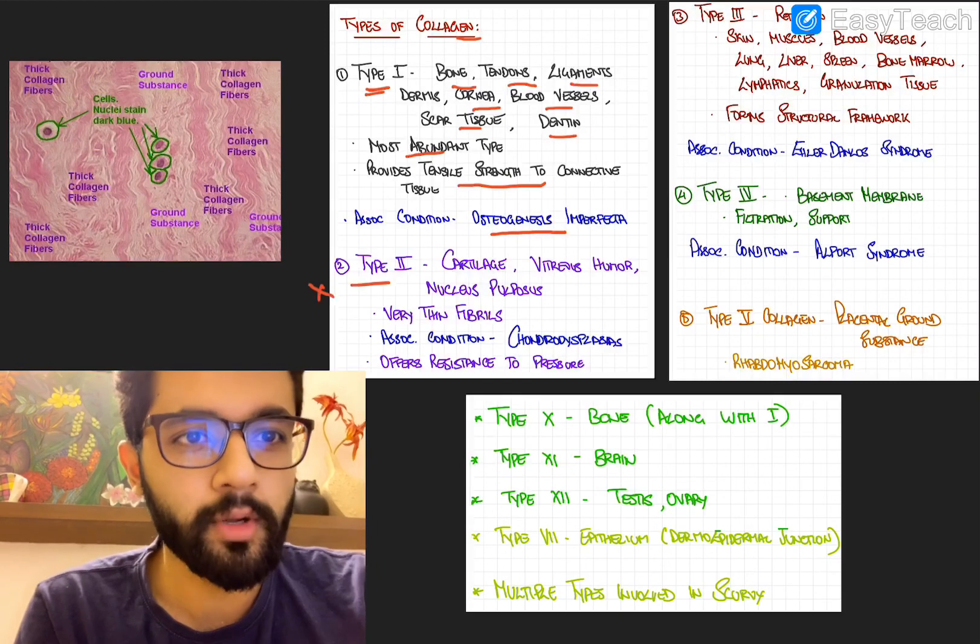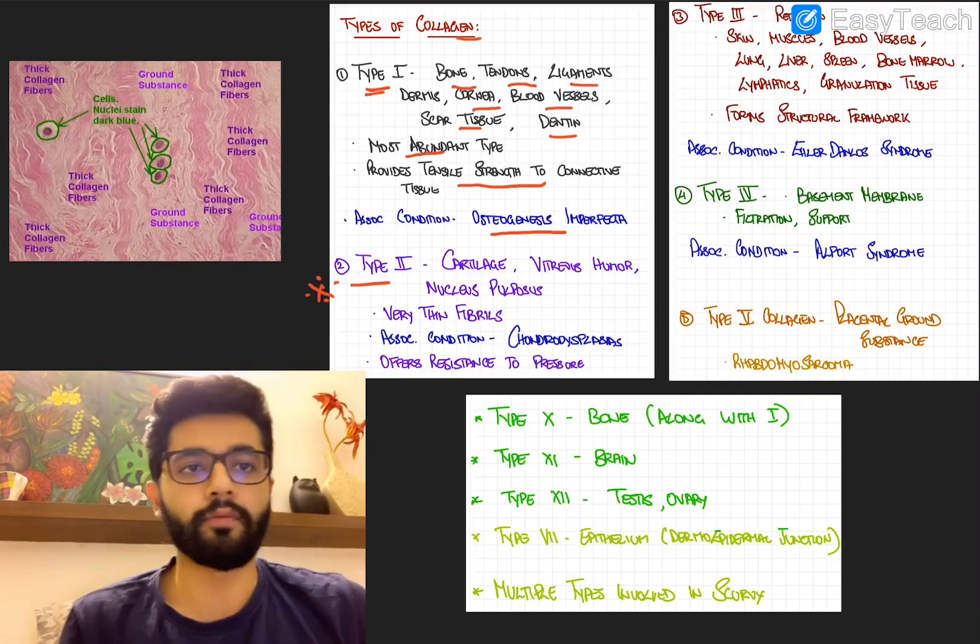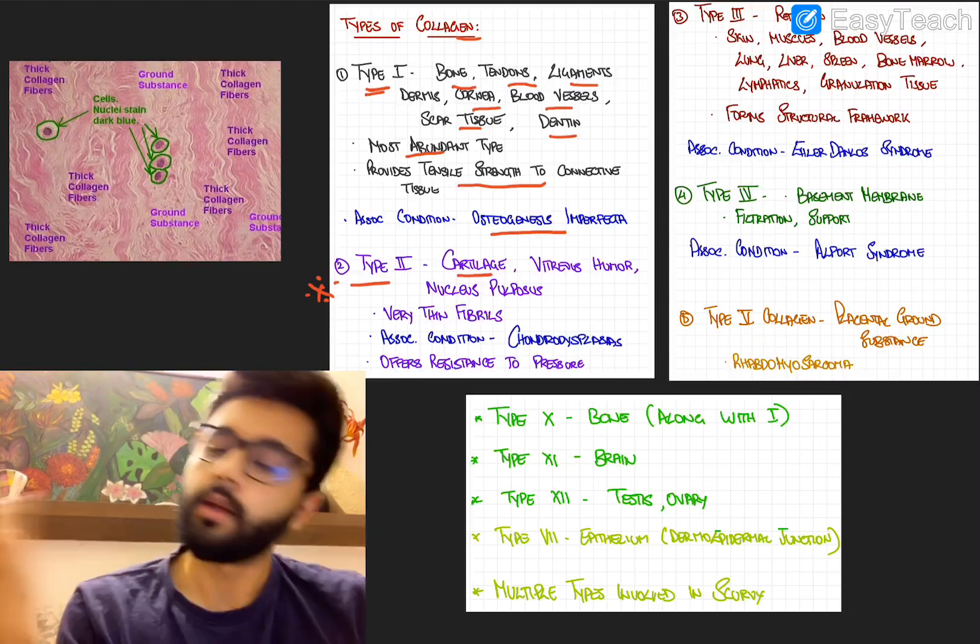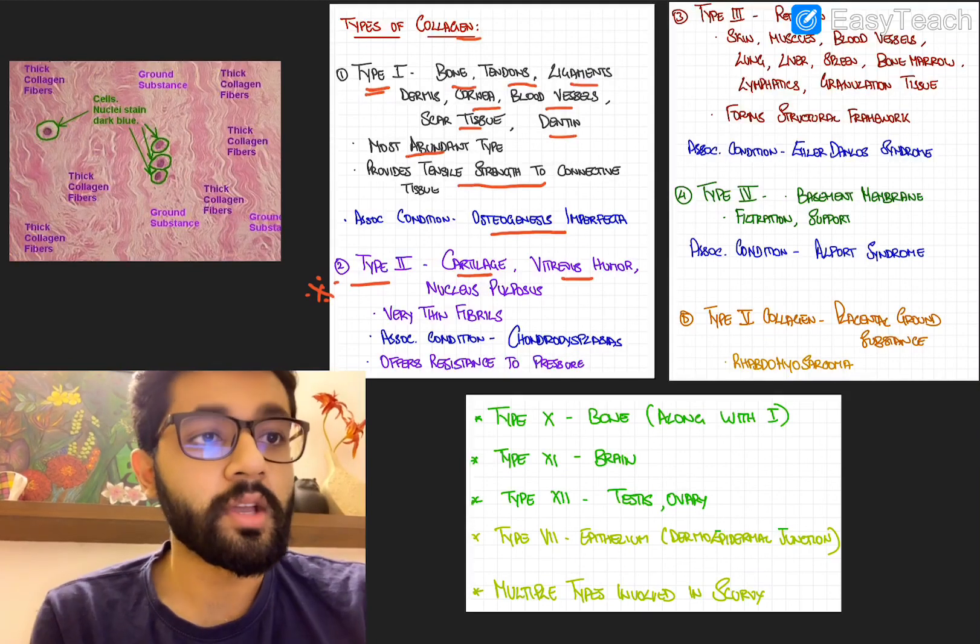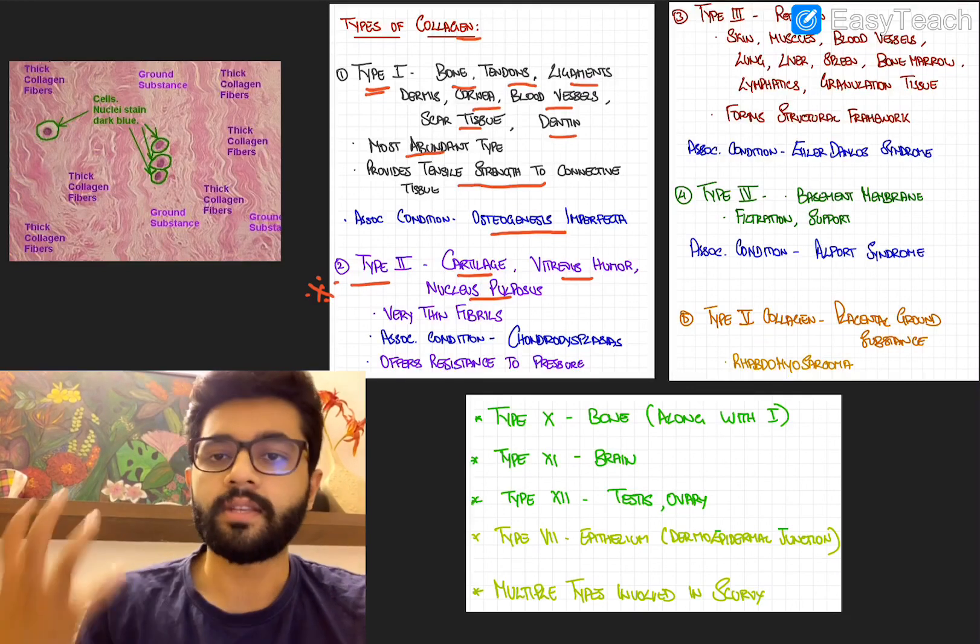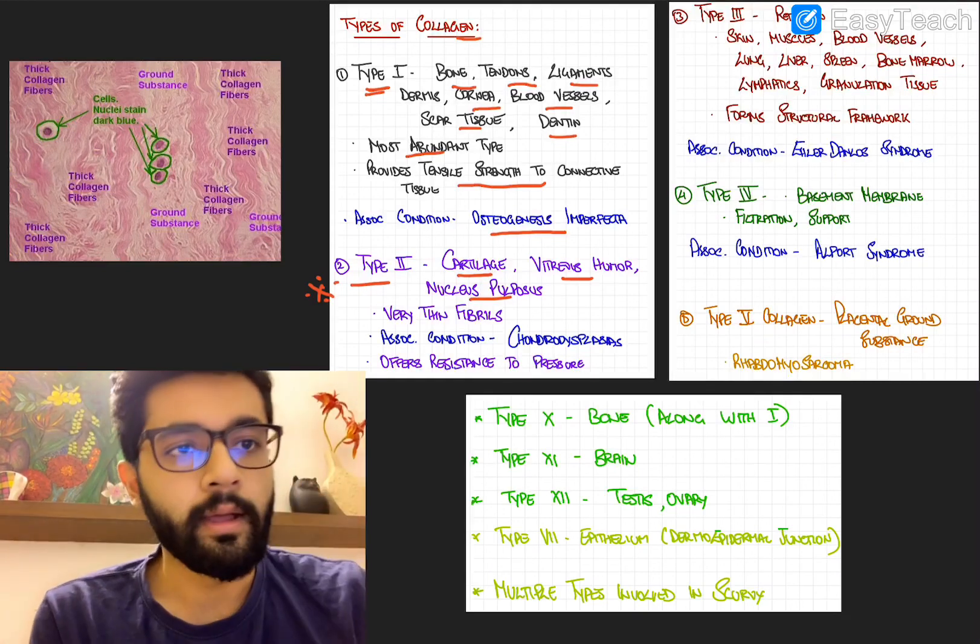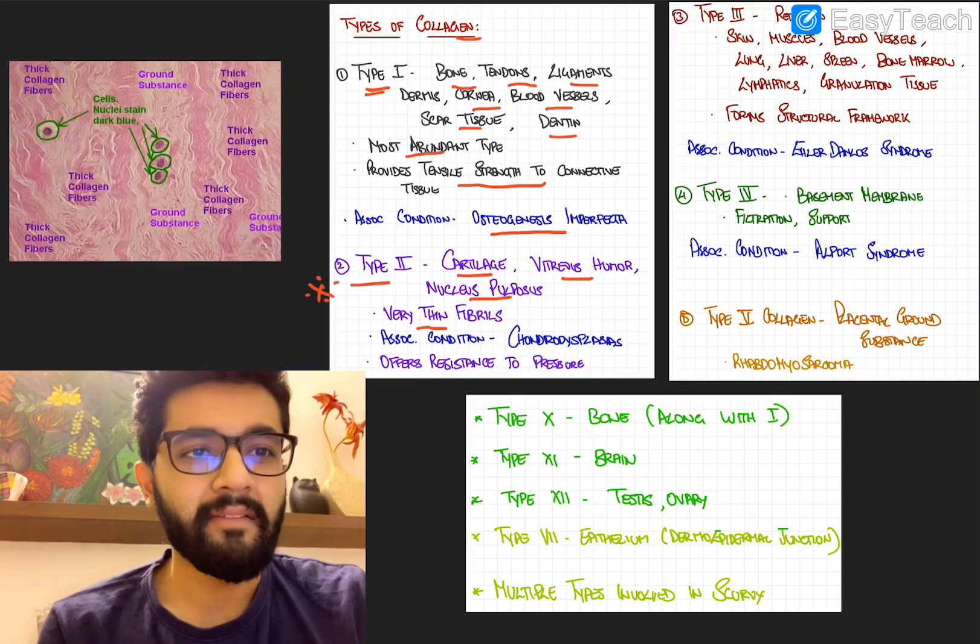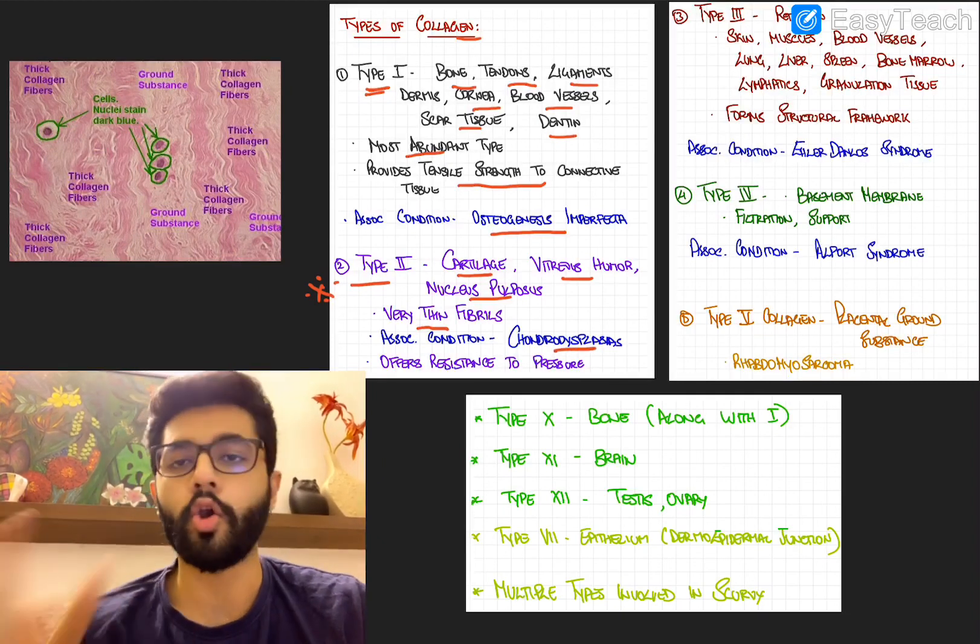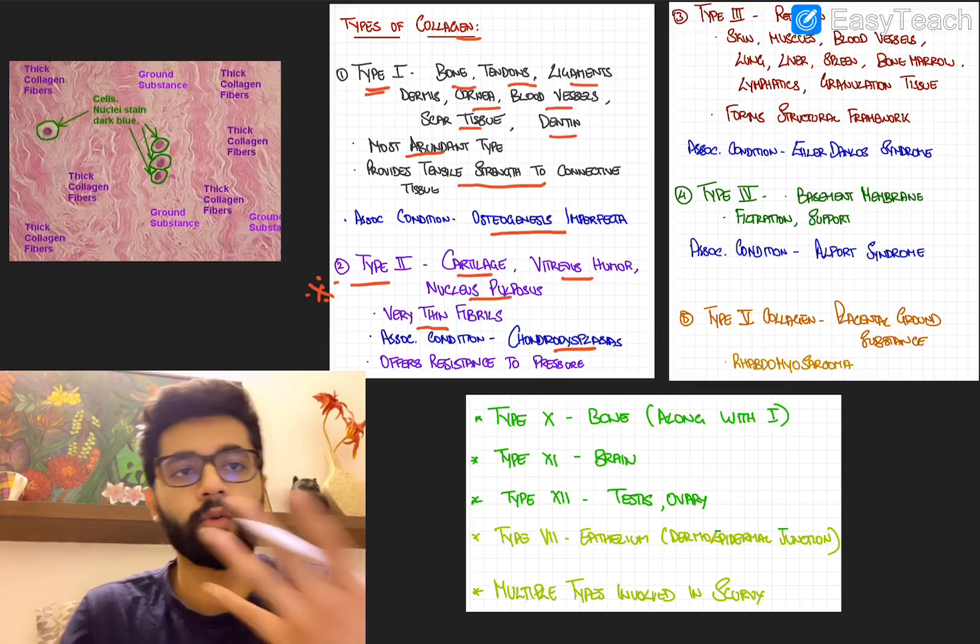Next, we'll go to the most important type of collagen from the exam point of view, which is type 2 collagen. This is mainly seen in cartilage, both elastic and hyaline cartilage, in the vitreous humor of the eye, and the nucleus pulposus of the spine or the vertebra. They have characteristically very thin fibrils, and they are usually associated with some chondrodysplasia. So we said it's mostly found in the cartilage, so they are associated with chondrodysplasia.